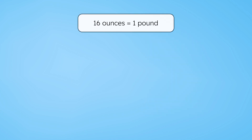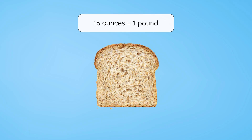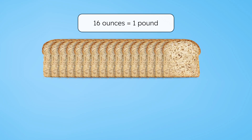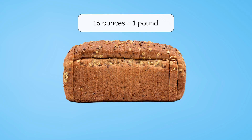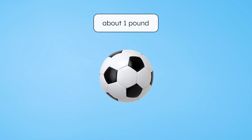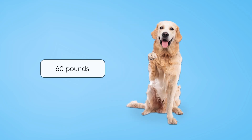Our next unit of weight is pounds. There are 16 ounces in one pound. So, if a slice of bread weighs about one ounce, 16 slices, or a whole loaf, would weigh one pound. We often use pounds to describe the weight of everyday objects. A soccer ball, for example, weighs about one pound. We can use pounds to describe the weight of heavier things too, like a big dog — that could weigh 60 pounds or more.